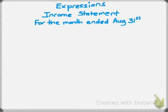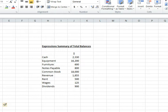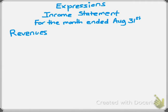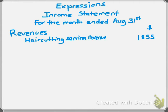The income statement only has revenues and expenses, so we start by listing revenues. Going back to our data set, revenues are $1,855. We'll call it haircutting service revenue, and the amount is $1,855. We didn't have any other revenues, so now we'll list our expenses.